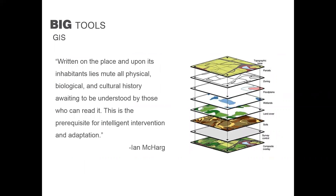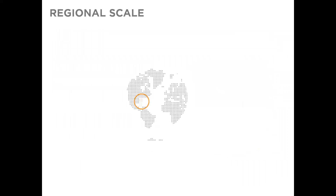Here's the quote again from Ian McHarg — this is the prerequisite for intelligent intervention and adaptation. That was echoed by Dangerman in his article given today's challenges with climate resiliency, population growth, and disproportion of resources. Something like GIS can really help us do what I would call intelligent tinkering — which is sort of an Aldo Leopold quote as well.